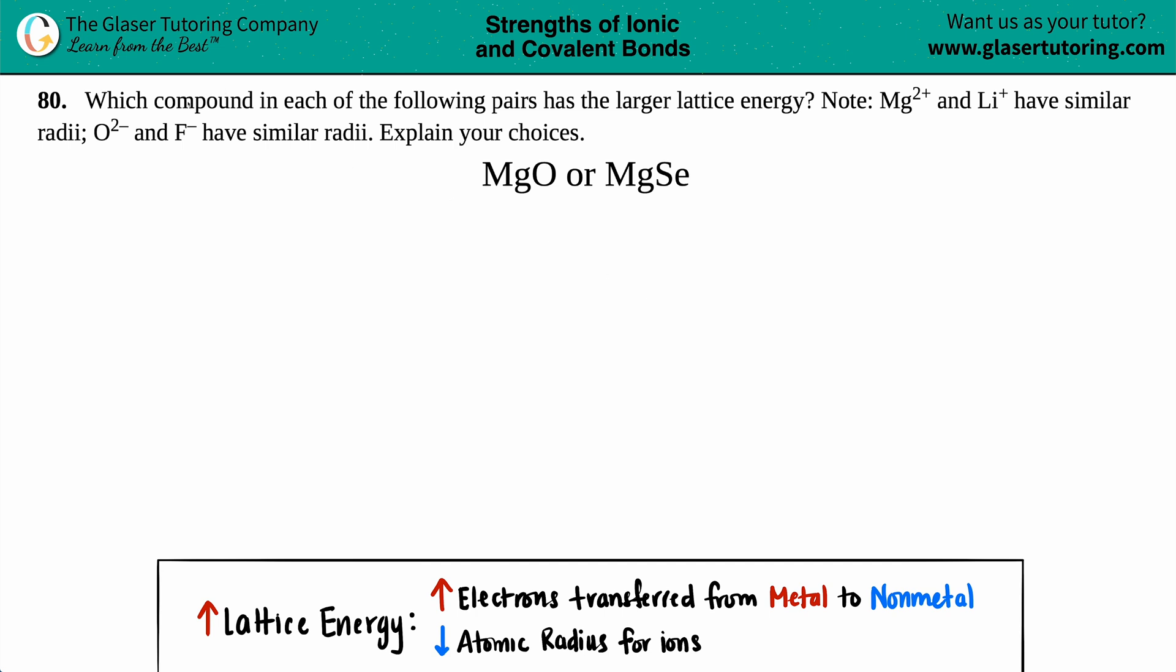Number 80: Which compound in each of the following pairs has the larger lattice energy? Note that Mg²⁺ and Li⁺ have similar radii, and O²⁻ and F⁻ have similar radii. Explain your choices.